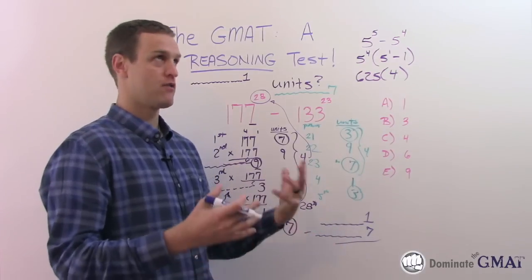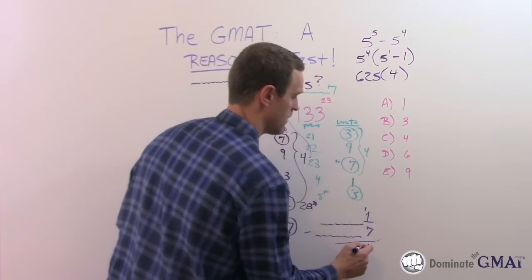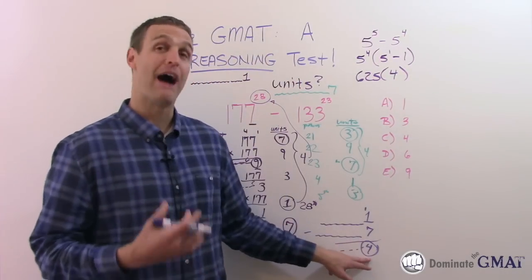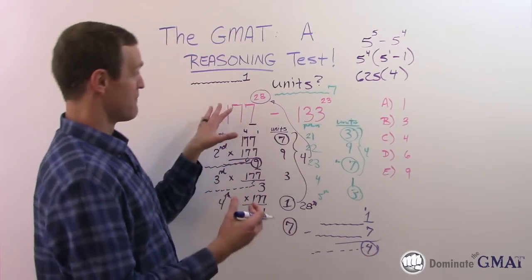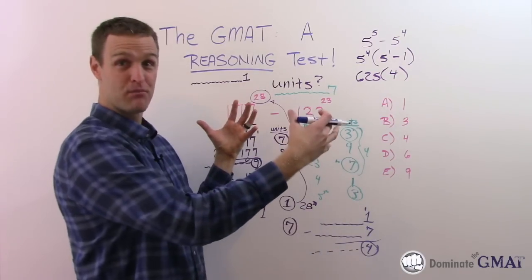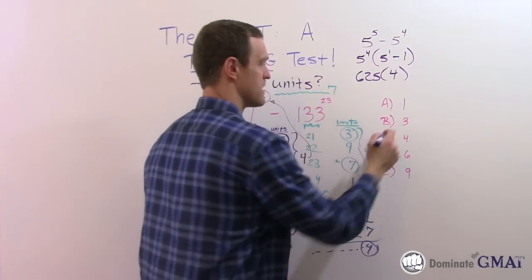If I subtract those, we have to borrow from the tens column - that's like 11 minus 7, which is 4. So it leaves a final outcome of 4. The unit's digit of the difference between those huge products would be 4, answer choice C.